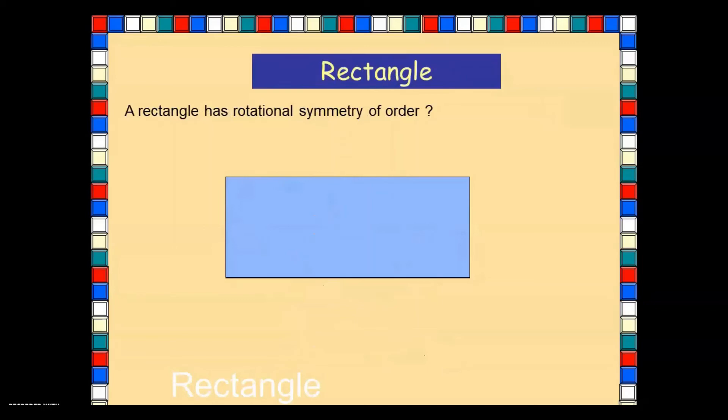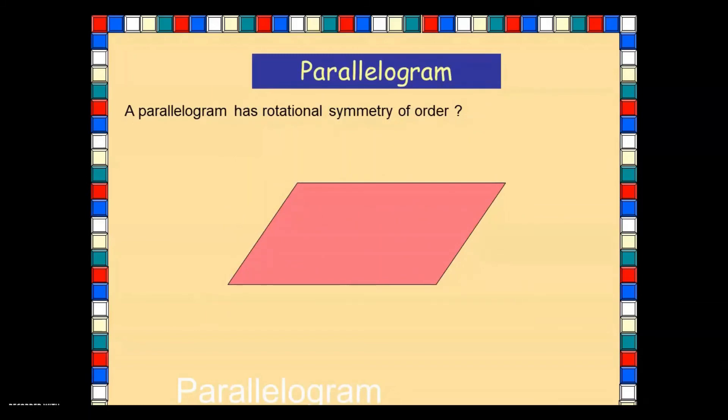Now let's look at some irregular polygons. A rectangle is irregular because all the sides are not equal. Now let's have a look at the order of rotational symmetry. After 180 degrees turn there is 1. After 360 degrees turn there is 1. So all together it has rotational symmetry of order 2. What about a parallelogram? Check this out: 1, 2. So it has rotational symmetry of order 2.